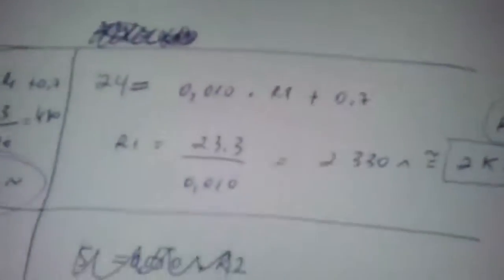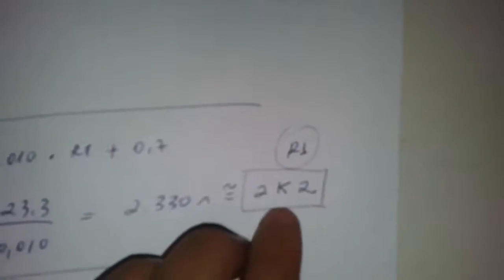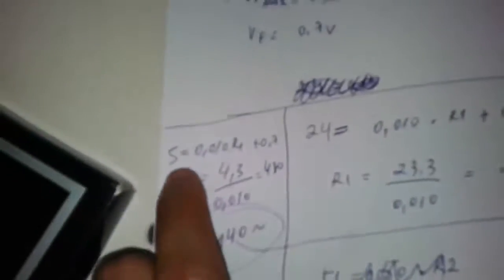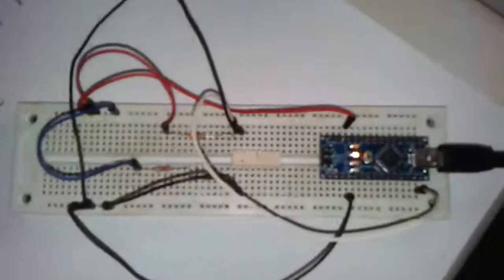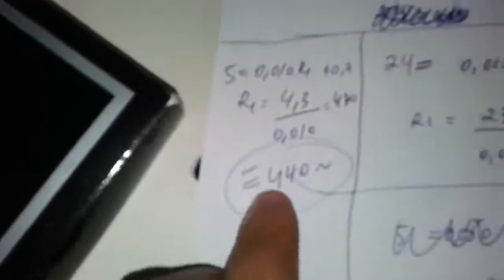So for 24 volts, we have 2.2K resistors. And for 5 volts, I will have here an experiment. We have 44 ohms in R2, we have here 330 ohms. So let's see how it works.